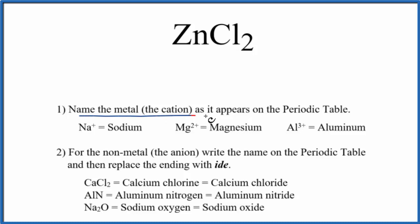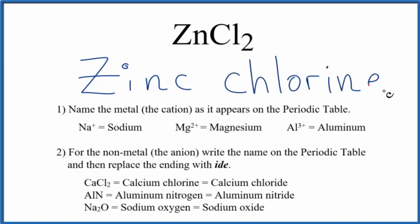First, we'd write the name for the metal as it appears on the periodic table. So Zn, that's zinc. Then, we'd write the name for the non-metal, also as it appears on the periodic table. Cl, that's chlorine, lowercase c, and we'll replace the ending with ide.